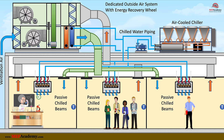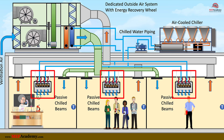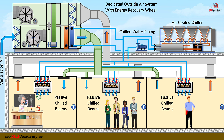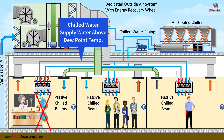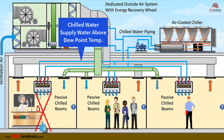In chilled beam applications, it's crucial to prevent reaching the dew point temperature and creating condensation. Chilled beams don't have condensate drains, so it's important moisture doesn't occur on the face of the chilled beam. By controlling humidity and maintaining the surface temperature of the chilled beam above the room's dew point, we avoid condensation, ensuring efficient cooling without the risk of moisture forming and dripping into the space below.